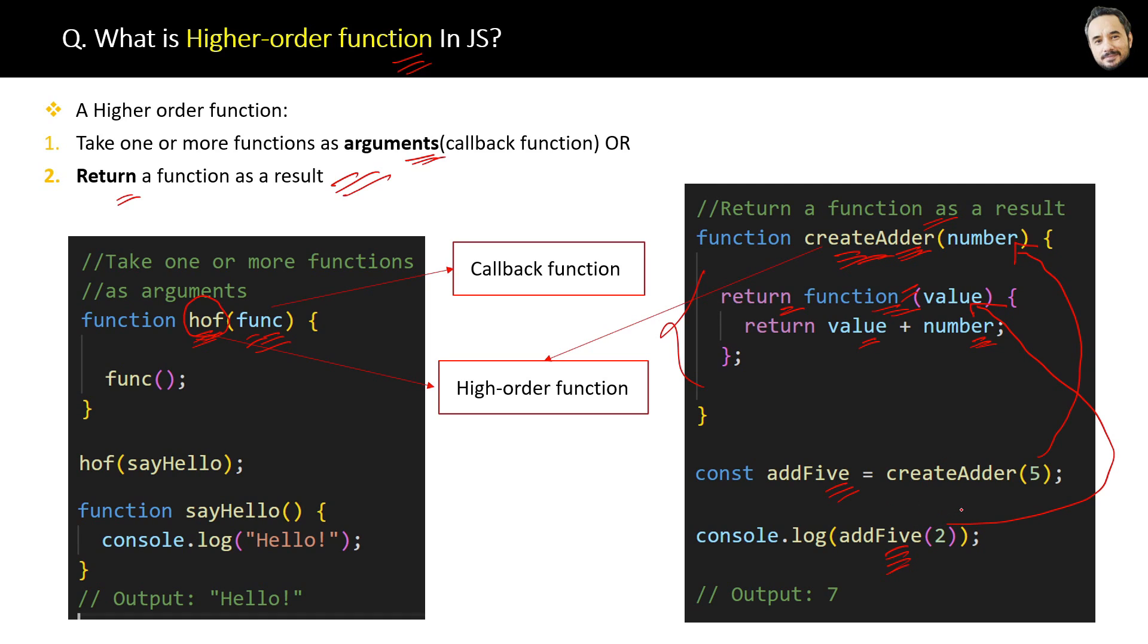So we are using function expression here, getting the result of the function in the variable and returning it. So now thereafter, the internal anonymous function will accept this value 2 here, and the createAdder function will accept 5 as the number parameter.